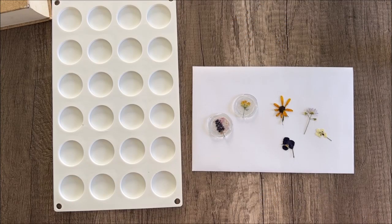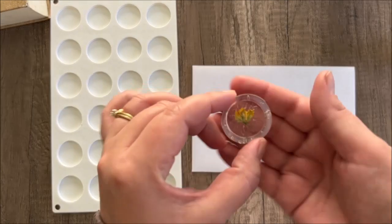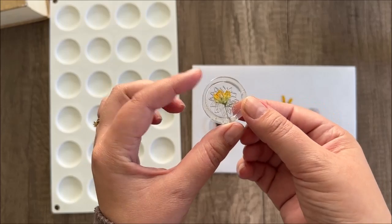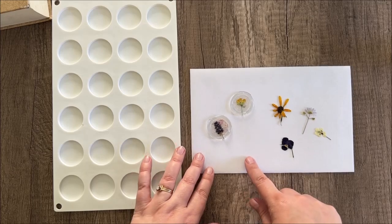Stephanie from My Porch Prints here, and today I've got a fun little project for you. We're going to be making these faux wax seals out of just hot glue and some pressed flowers, and we're going to use some papers as well. So let's go ahead and get started.